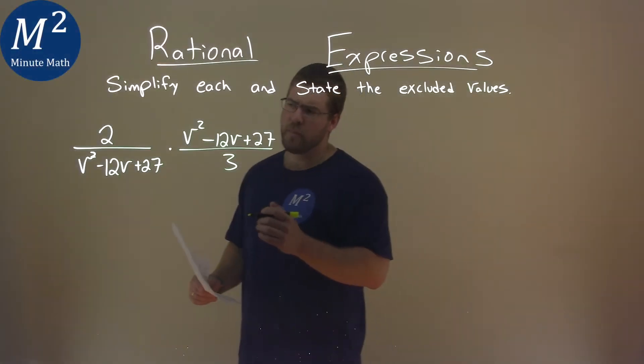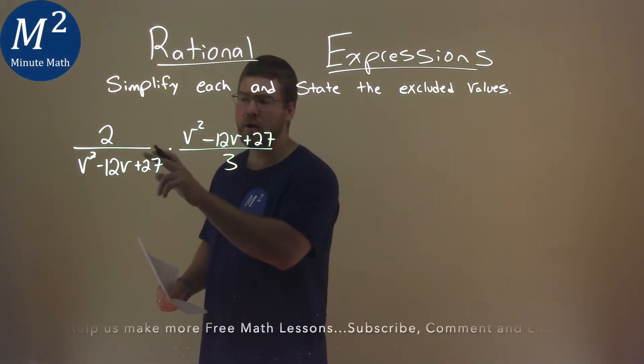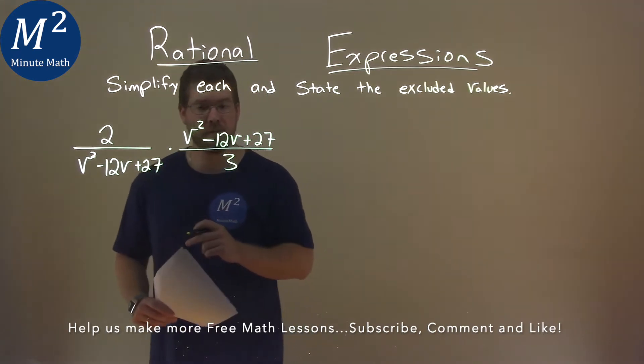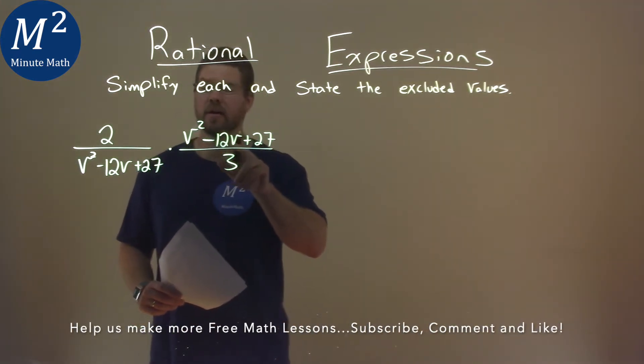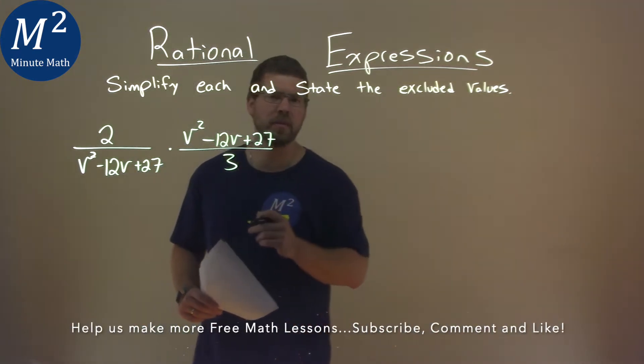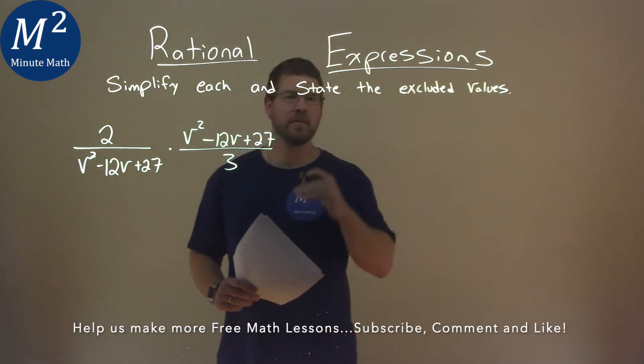We're given this problem right here. 2 over v squared minus 12v plus 27 times v squared minus 12v plus 27 over 3. We need to simplify this and state the excluded value.